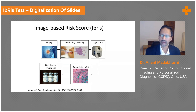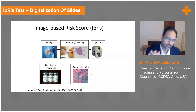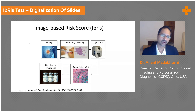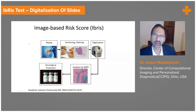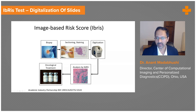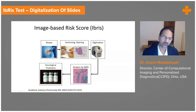The beauty of this was that we could do this on a slide that was digitized, which means we're not disrupting the entire clinical workflow for the pathologist. And so we came up with the concept of the image-based risk score, or IBRIS — the idea being to use AI with these pathology slide images to find patterns that could tell us about disease aggressiveness and risk stratification.